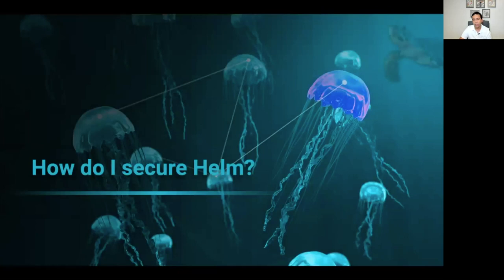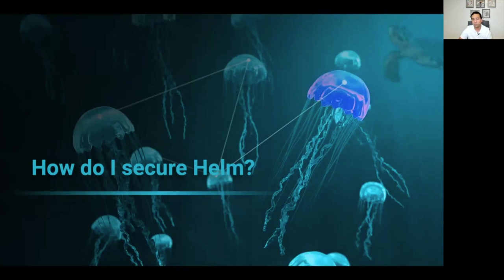At first glance, using Helm sounds great — if you want to install any software packaged into a Helm chart, you can just do a Helm install without breaking your head figuring out how to get it running. That's really great for experimenting, but you do have to be careful with third-party charts, as they may not have all the security considerations for your production environment embedded by default. That's what we'll discuss today — how to safely use Helm while maintaining the ease of use of a package manager.